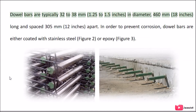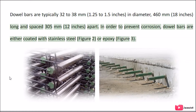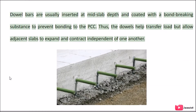Dowel bars are typically 32 to 38 millimeters (1.25 to 1.5 inches) in diameter, 460 millimeters (18 inches) long, and spaced 305 millimeters (12 inches) apart. In order to prevent corrosion, dowel bars are either coated with stainless steel (figure 2) or epoxy (figure 3). Dowel bars are usually inserted at mid-slab depth and coated with a bond-breaking substance to prevent bonding to the PCC. Thus, the dowels help transfer load but allow adjacent slabs to expand and contract independent of one another.